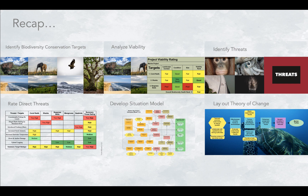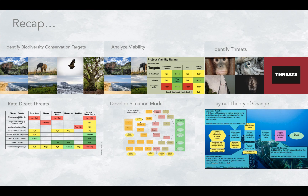Okay, so let's recap. These are the elements you've now prepared to help you proceed to Step 3: you've identified your biodiversity conservation targets, completed a viability analysis, identified and rated your direct threats, laid out your situation model, identified key intervention points to prioritize your strategies, laid out your strategies and interventions in a theory of change, and defined your activities and your measurable goals, objectives, and indicators along that theory of change.